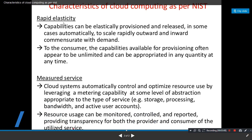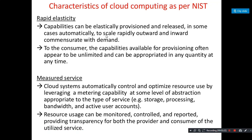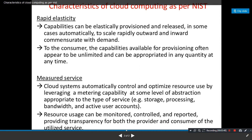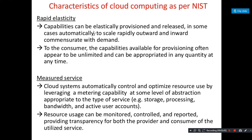Fourth is rapid elasticity. Elasticity means something that can scale. Today you have two CPUs, but if you need 25 processors for any reason, you just need a little support and you get a lot of processing power for that day — without any hardware upgrade. You can increase or reduce resources, and you pay only for what you use. This is rapid elasticity.